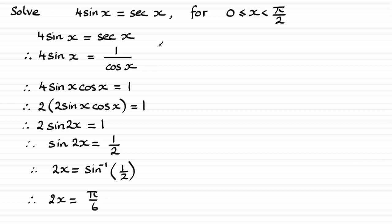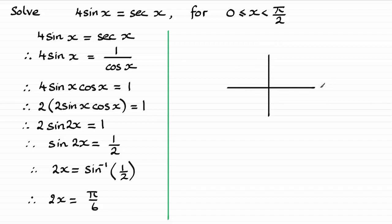At this point, I'd want to figure out what the other answers are by drawing a quadrant diagram. We'll put our quadrant diagram in here — this will be 0 radians, and the equivalent of 90 degrees would be pi upon 2 radians. But we're doubling our value for x here, so if I double the values of x, we get a new range: doubling 0 is 0, doubling x becomes 2x, and doubling pi upon 2 becomes pi.